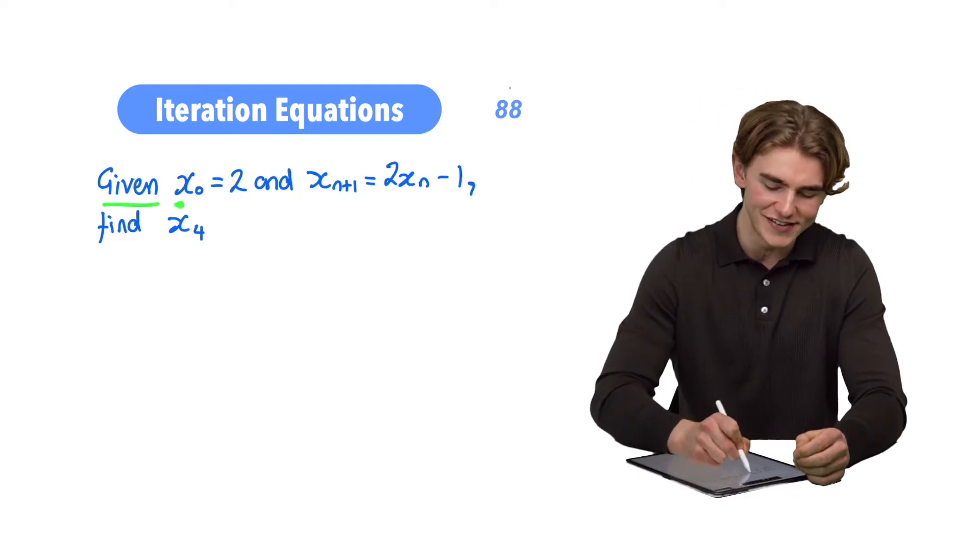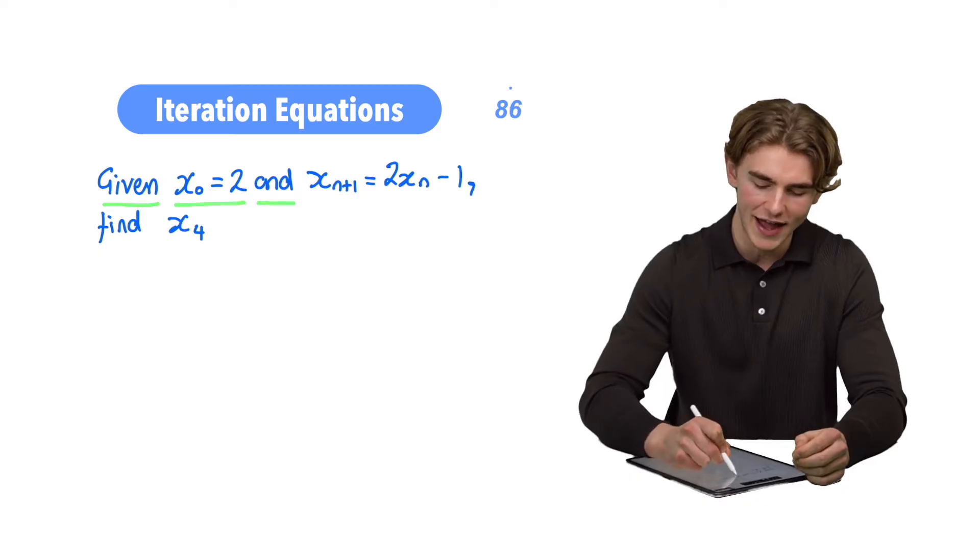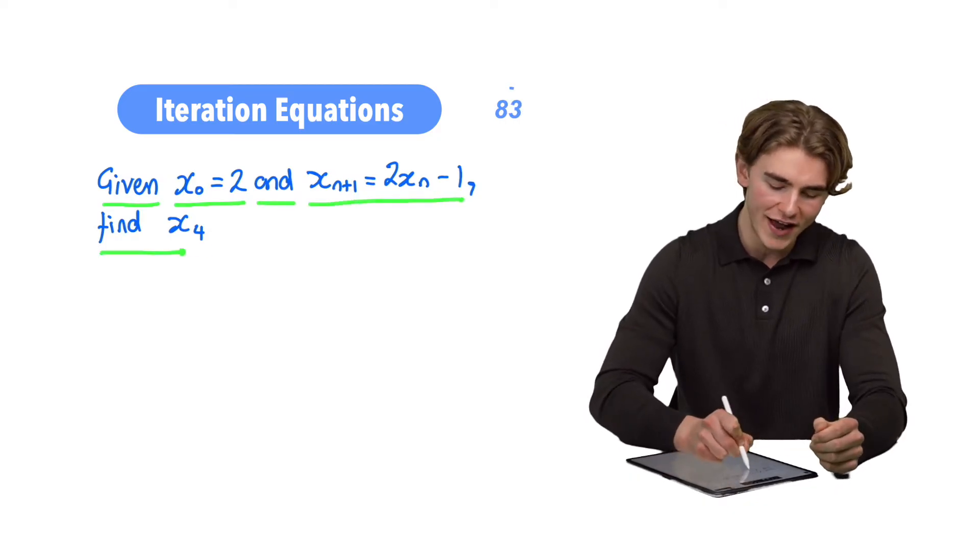The question says, given that x0 equals 2 and xn plus 1 equals 2xn minus 1, find x4.